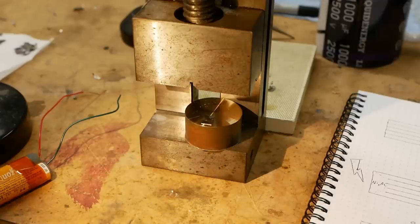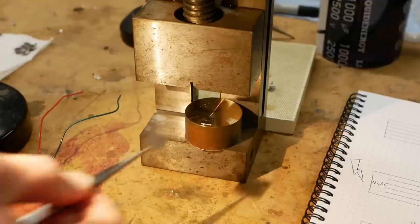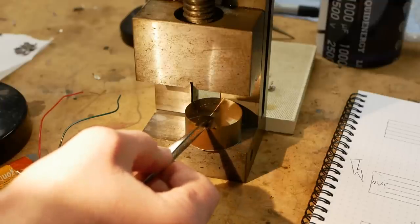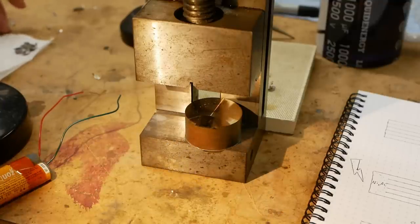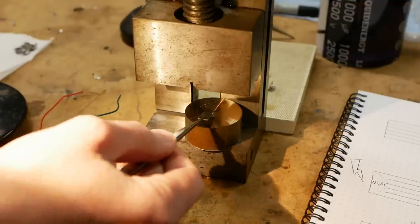So we'll start with one piece of solder there and then we'll put in the energetic compound and then we will put in another piece of solder.